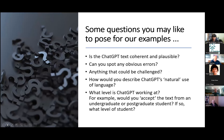Let's look at the examples. The examples we used last time are down the left-hand side of that slide and are still available. Some questions you may like to pose: Is the text coherent? Can you spot any obvious errors? Anything that could be challenged? ChatGPT says it makes natural use of language — do we agree? And particularly important: what level is ChatGPT working at? We know it can generate answers to exam and assignment questions that will pass at certain levels — that's gone up to MBA level in studies we've seen.